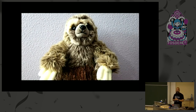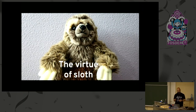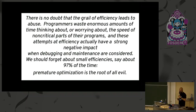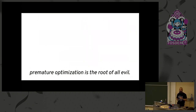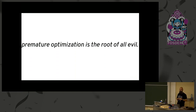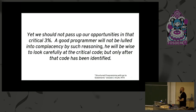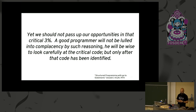Now I want to take a turn and talk about the virtue of sloth. This is a famous quote from Donald Knuth's book — everyone knows this part: 'Premature optimization is the root of all evil.' What people do not know is the very next sentence: 'We should not pass up opportunities in that critical 3%.' A good programmer will not be lulled into complacency by such reasoning. He will be wise to look carefully at the critical code — but only after that code has been identified.